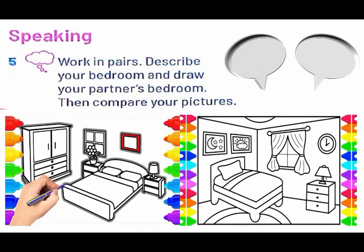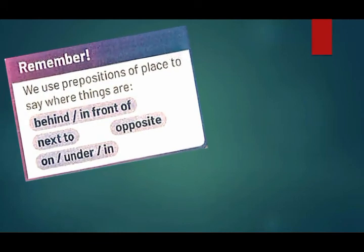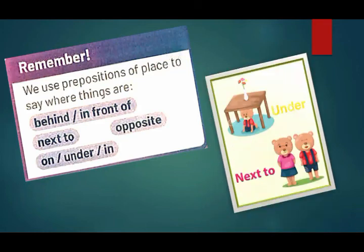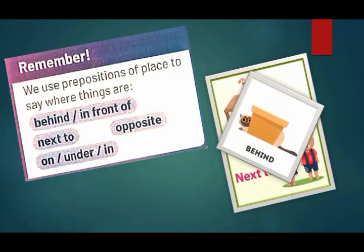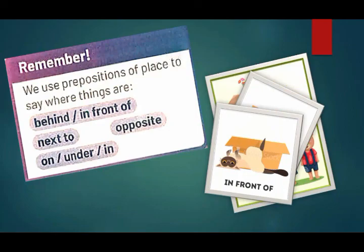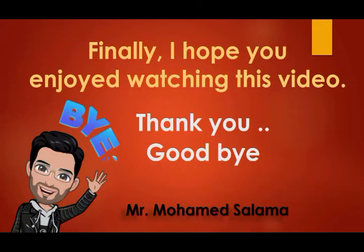Here we have a pair work again. You have to describe your bedroom to your partner, and your partner should describe their bedroom to you. Compare your pictures together. Remember that we use prepositions of place to say where things are — like behind, in front of, next to, opposite, on, in, or under. Finally, I hope you enjoyed watching this video. Thank you for watching and goodbye.